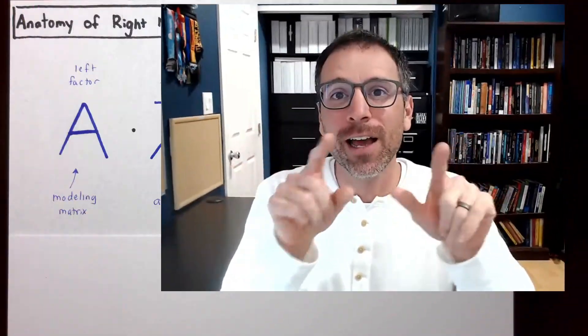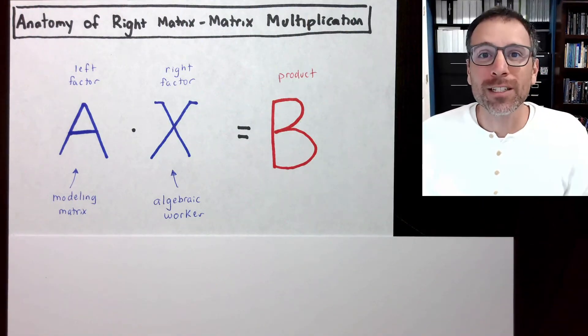Let's talk about the anatomy of matrix-matrix multiplication. We're going to talk about two different types. One is called right matrix-matrix multiplication, where we multiply a modeling matrix A on the right-hand side by an algebraic worker X. The other is called left matrix-matrix multiplication, where we take a modeling matrix A and multiply on the left-hand side. Let's begin with right matrix-matrix multiplication.